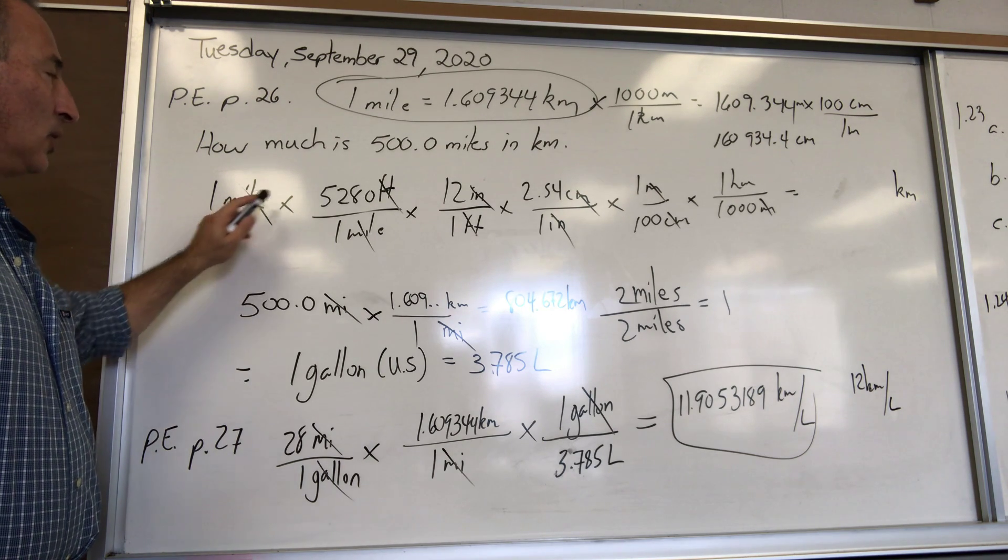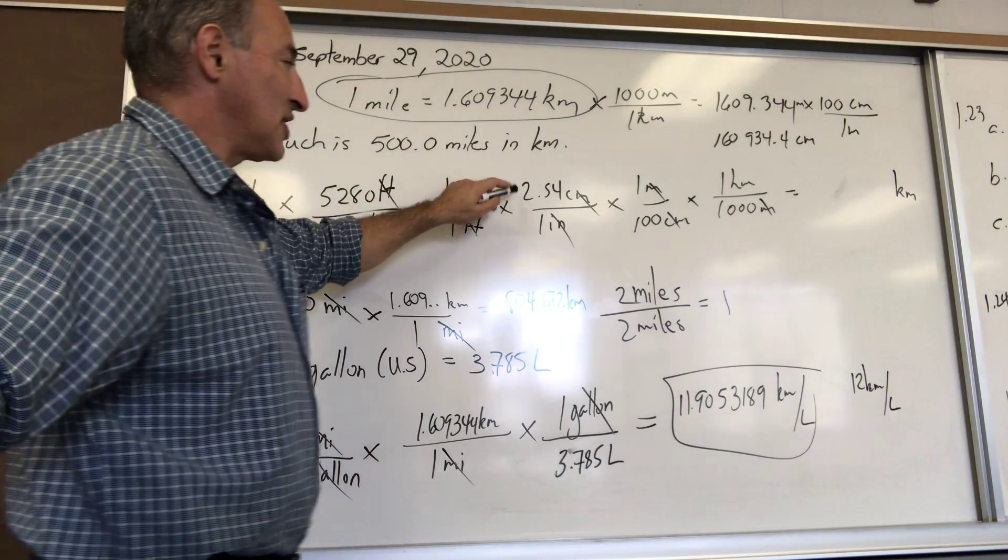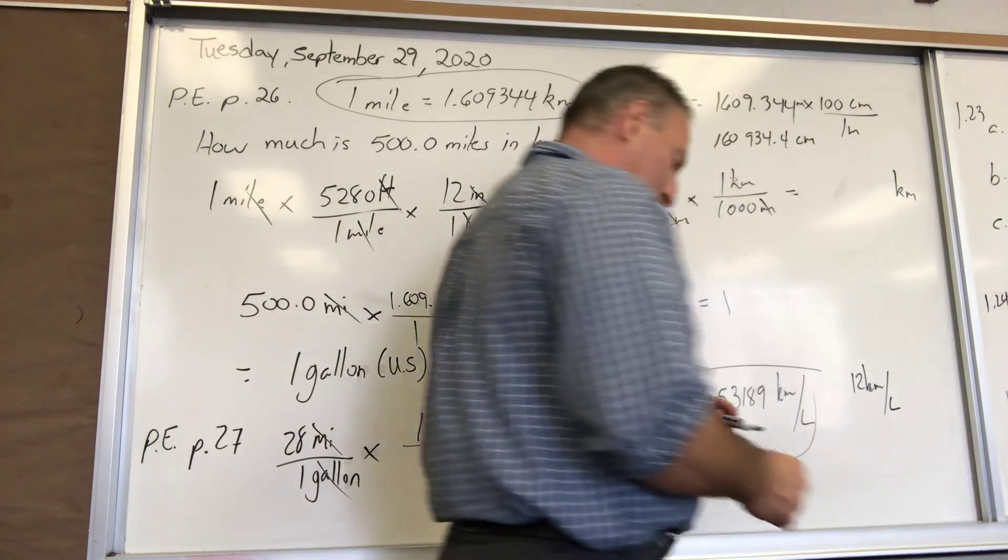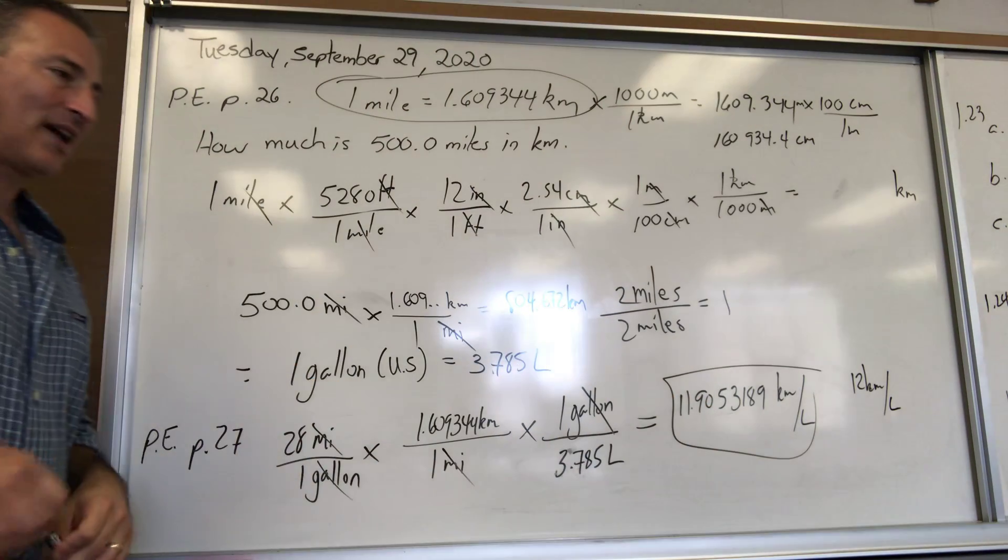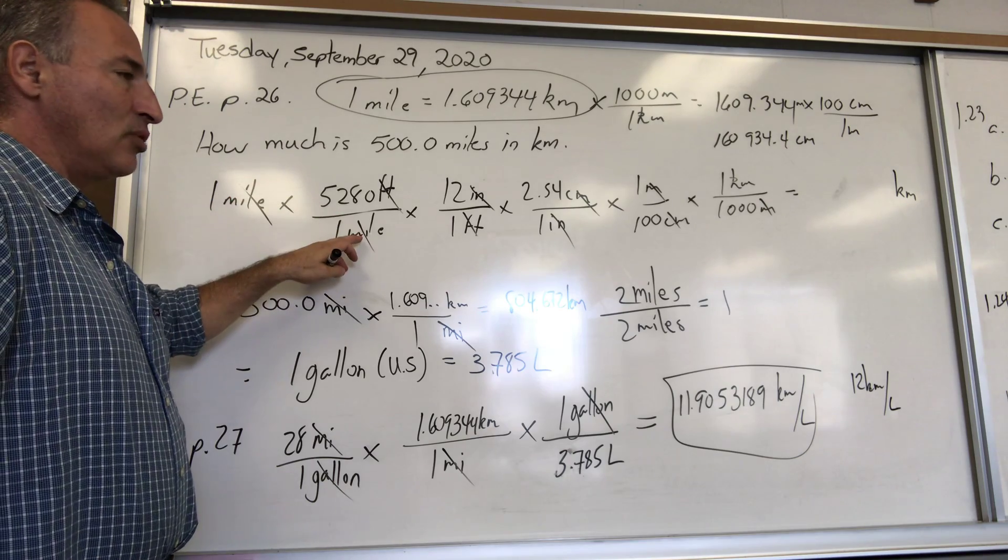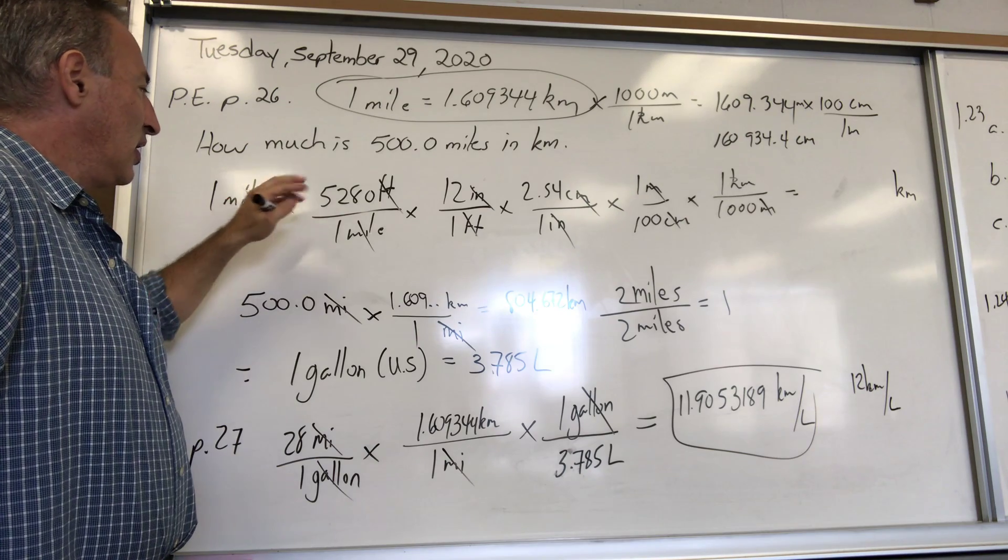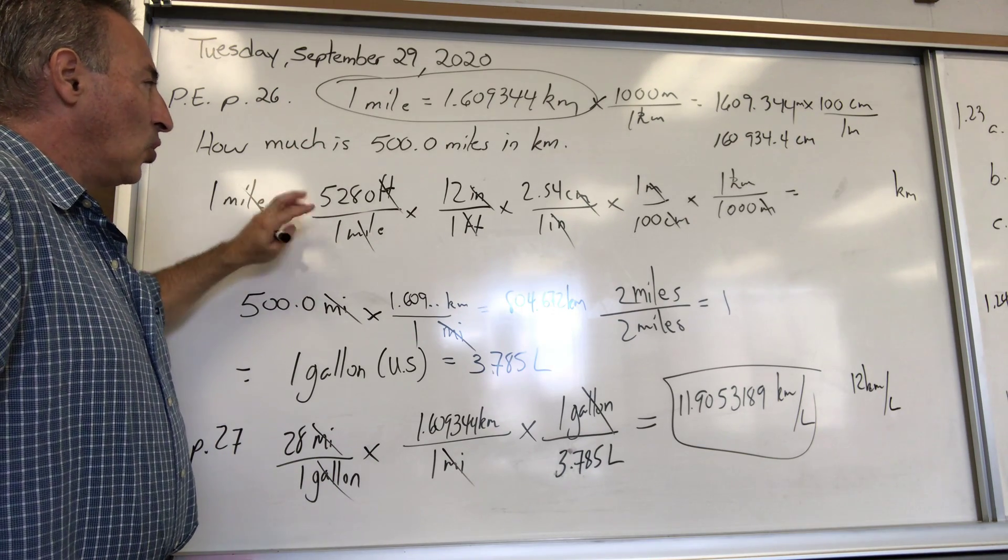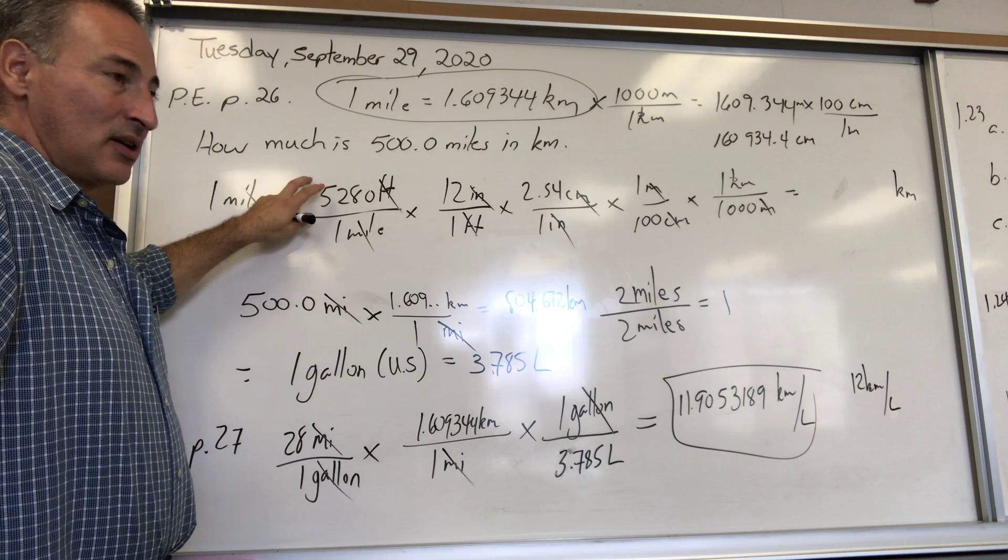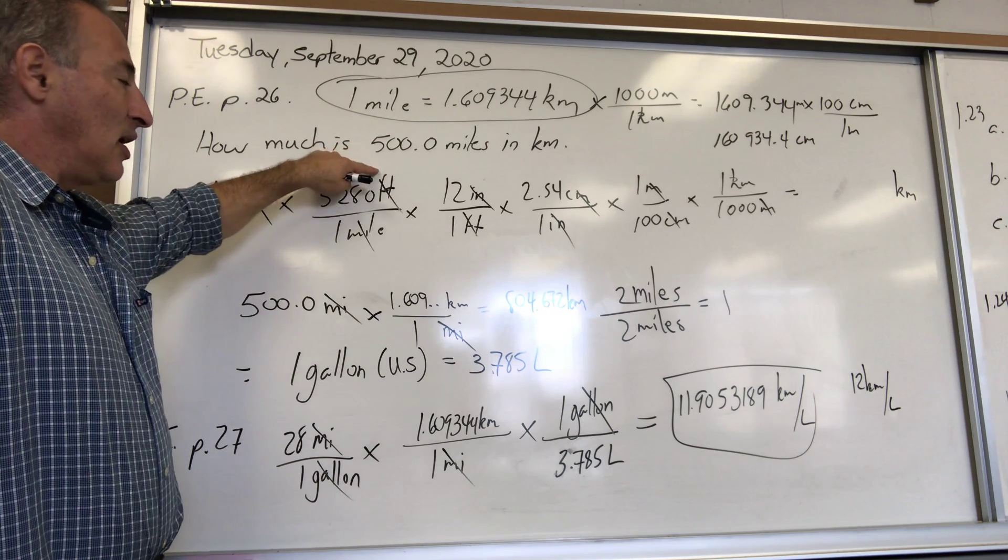I start off with one mile. I know there's 5280 feet per mile, 12 inches per foot, 2.54 centimeters per inch, one meter per hundred centimeters, and one kilometer per thousand meters. How did I know which order to put all these conversion factors in? I'm always trying to eliminate the unit that's in the numerator.